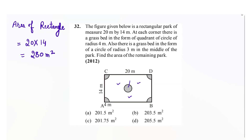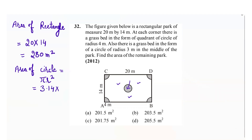Then we will calculate the area of the circle which is in the middle of the rectangle. Area of circle is equals to pi r square, which is equals to 3.14, and the radius is already given in the question, which is 3 meter. So it would be 3.14 times 3 times 3, which is equals to 3.14 times 9, which is equals to 28.26 meter square.